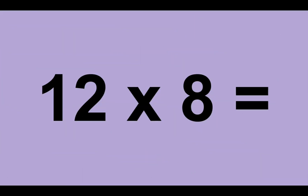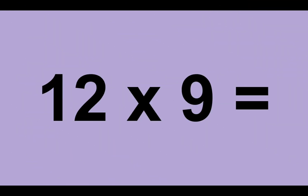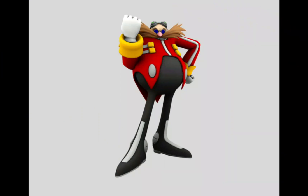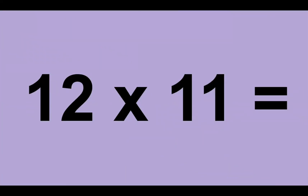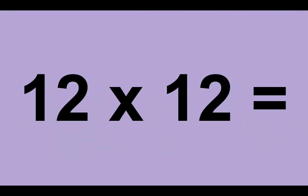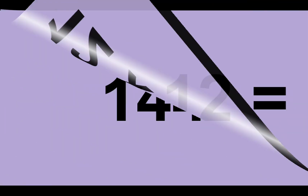Twelve times eight equals ninety-six. Twelve times nine equals one hundred and eight. Twelve times ten equals one hundred and twenty. Twelve times eleven equals one hundred and thirty-two. Twelve times twelve equals one hundred and forty-four.